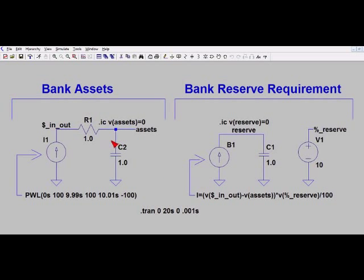But when the current reverses and I withdraw funds from C2, the V_assets is bigger than the voltage at the dollar_in_out node and the current becomes negative. Now this current is multiplied by the percent reserve, which in this case is always 10 percent, and to convert 10 percent to a fraction I do the divide by 100 with this term.